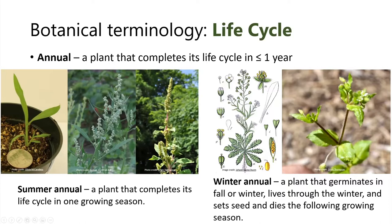A winter annual typically survives six to nine months. It germinates in the fall or winter, overwinters — often under snow cover — and then in the following growing season it sets seed and dies. Two examples are shepherd's purse and common chickweed.